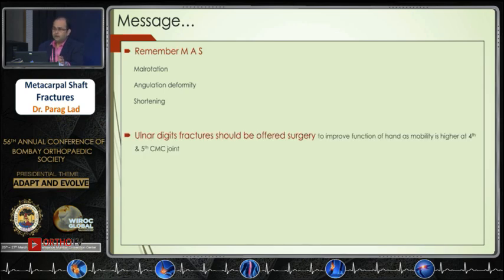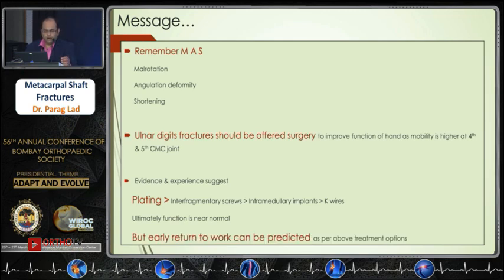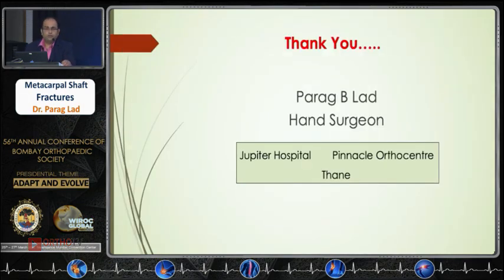Remember MAS in metacarpal shaft fractures. Ulnar digits should be offered surgery. Evidence shows that early mobilization can be done with open reduction and plating, followed by interfragmentary screws and K-wires. Ultimately, function is usually normal if you stabilize them properly, and early return to work can be predicted with the above treatment options. Thank you.